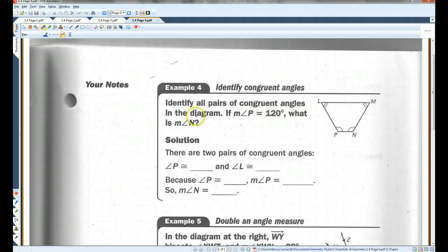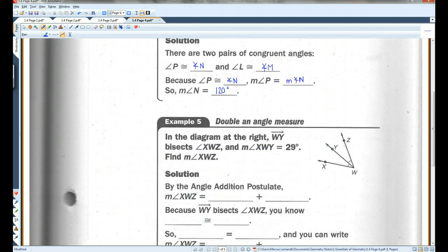Identify all pairs of congruent angles in the diagram. Okay. So, first of all, if you look at the arcs, angle P is congruent to angle N, because each of them have one arc. Angle L has two arcs. So, does angle M. So, these two angles are also congruent. Now, if angle P is 120 degrees, what is angle N? Well, because angle P is congruent to angle N, that means the measure of angle P equals the measure of angle N. Once again, this little M indicates measure. So, the measure of angle N is also 120 degrees.